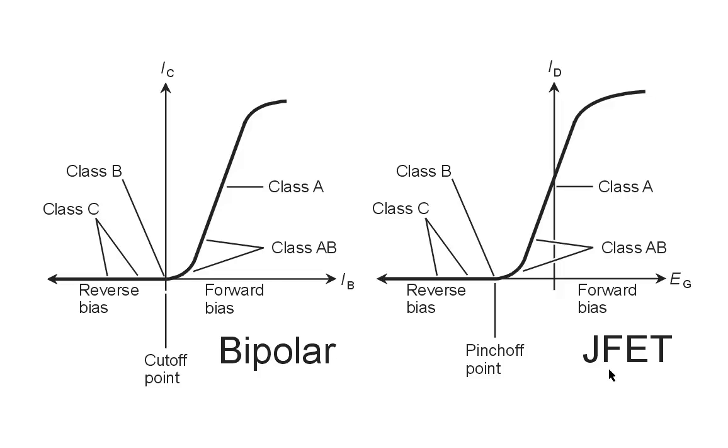I have labeled the various classes of operation and where the bias points would be under no signal conditions. I sub B is the base current. I sub C is the collector current. That's in a bipolar transistor.